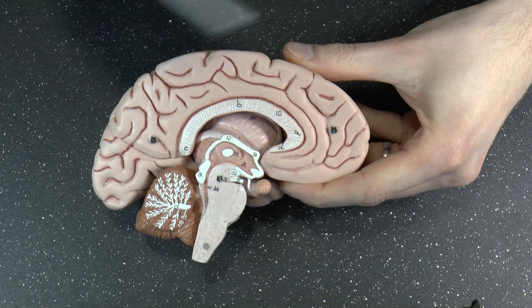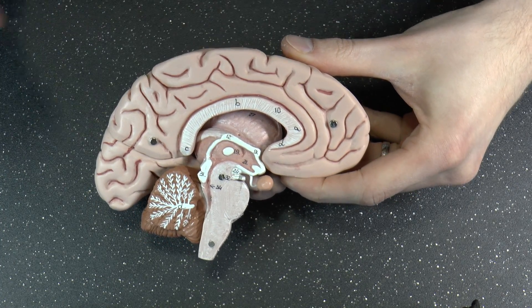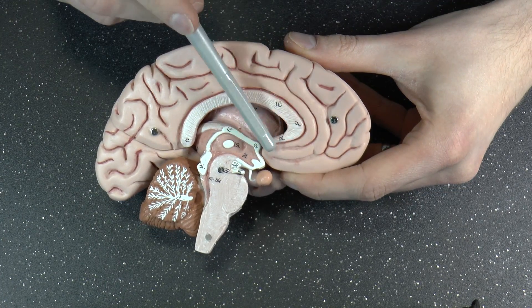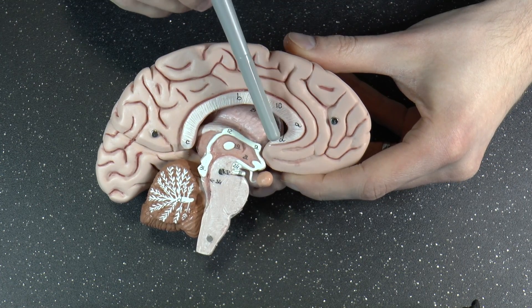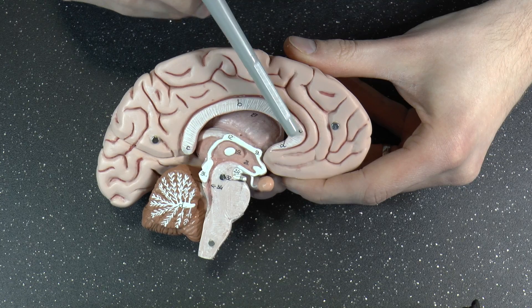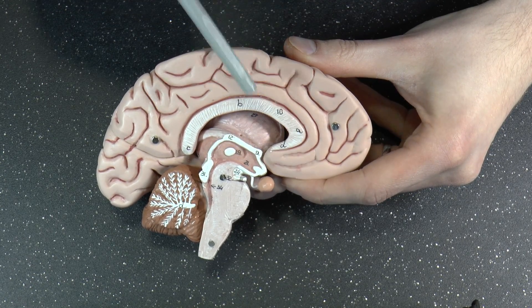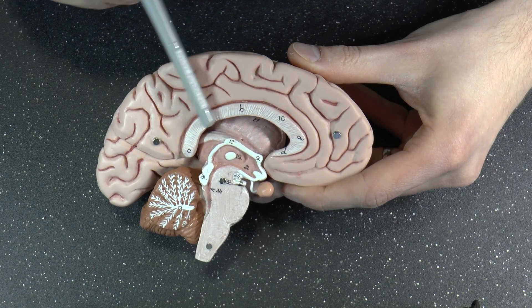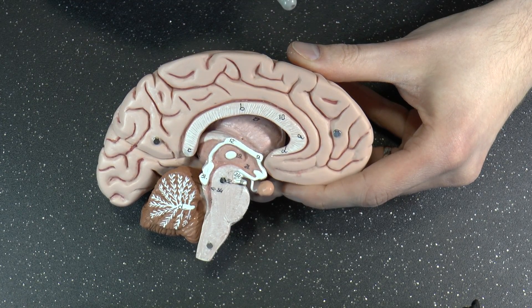Now the corpus callosum has different parts. There is no the corpus callosum. The corpus callosum has several parts. Starting at the front, you have the rostrum, which means bill, like the bill of a bird. And you have the genu, which means knee. And you can see why it's called that. It's kind of bent like a knee. You have the body of the corpus callosum.